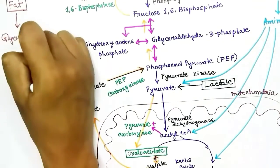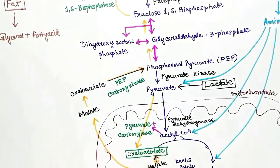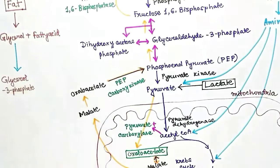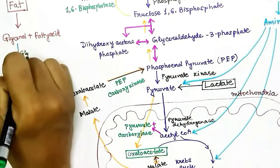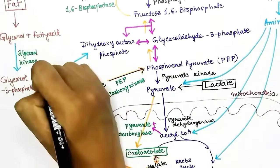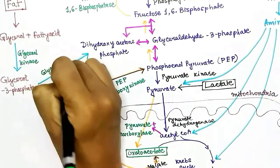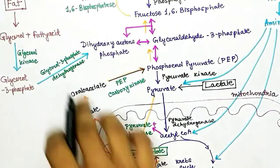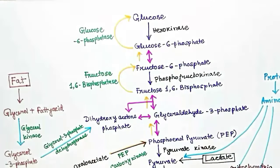Fat can also be converted into glucose. Fat contains glycerol and fatty acid molecules. Glycerol can be converted to glycerol-3-phosphate using the enzyme glycerol kinase, and then glycerol-3-phosphate can be converted to dihydroxyacetone phosphate using glycerol-3-phosphate dehydrogenase. This is how glycerol enters the gluconeogenesis pathway, as dihydroxyacetone phosphate is part of the reverse glycolysis pathway.